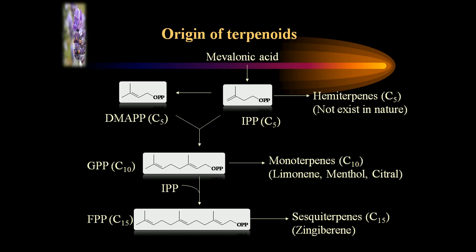This isopentenyl pyrophosphate combines with another unit of isoprene. When two units of IPP combine, they form geranyl pyrophosphate (GPP), the monoterpene precursor. When IPP further combines with GPP, it forms farnesyl pyrophosphate (FPP), the sesquiterpene precursor, with the condensation occurring in a head-to-tail fashion.